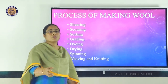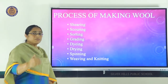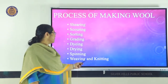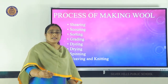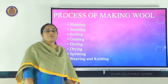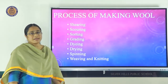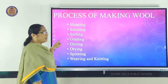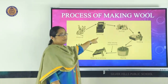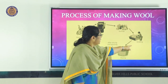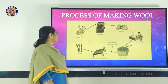Next is coloring. Wool naturally comes in white, black, brown, and yellow colors, but in markets we get different colored wool. The process of dyeing adds color to the wool. After dyeing, it is sent for drying. Then the dried wool is collected and sent for spinning to make yarn. The final step is weaving or knitting to make woolen clothes and fabrics.